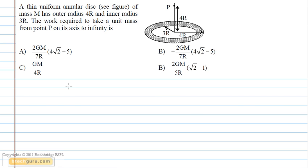We know that work done per unit mass is given by the change in potential. That is, in this case it will be potential at infinity minus potential at point P. And we know that the potential at infinity is equal to zero.